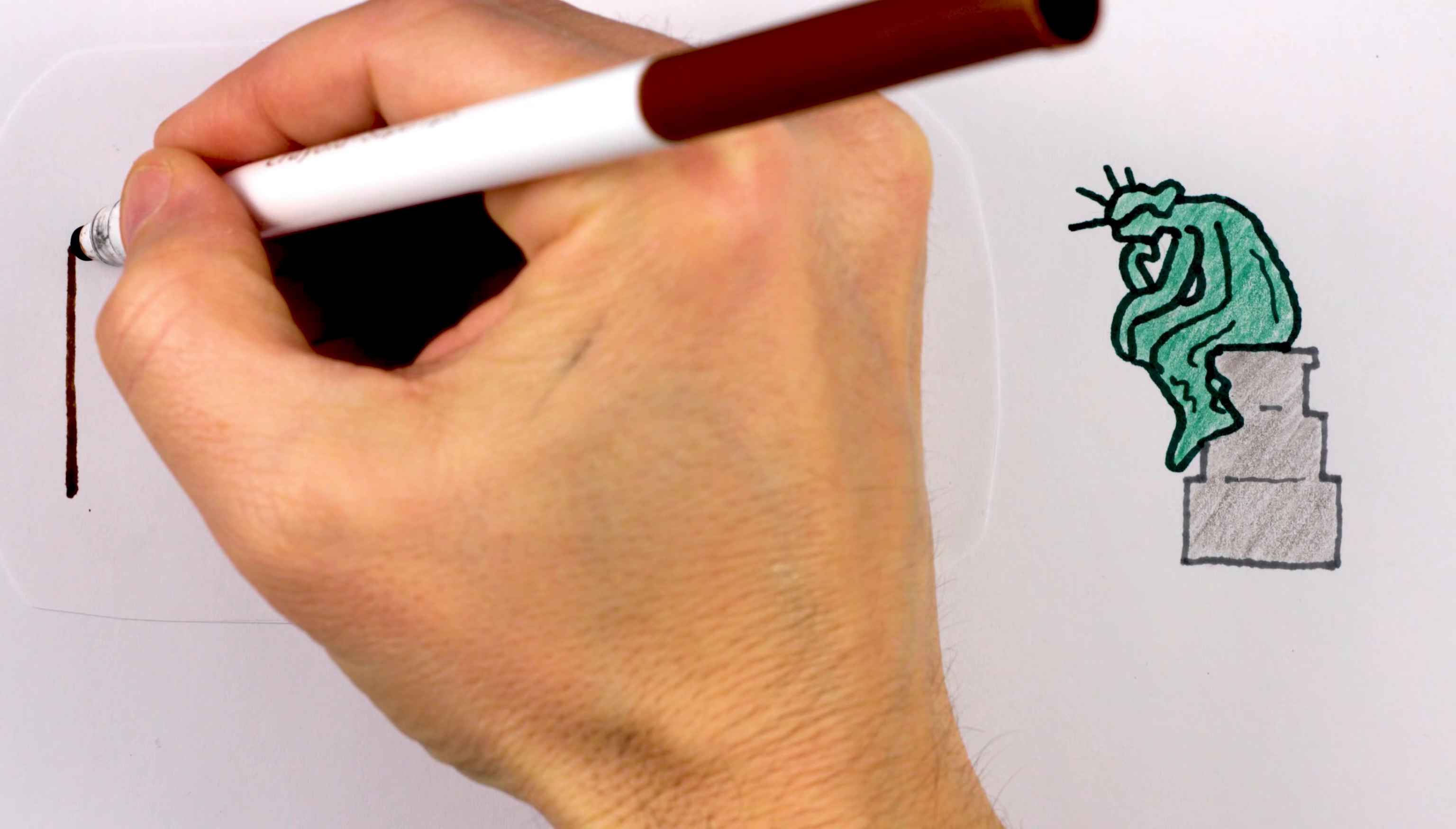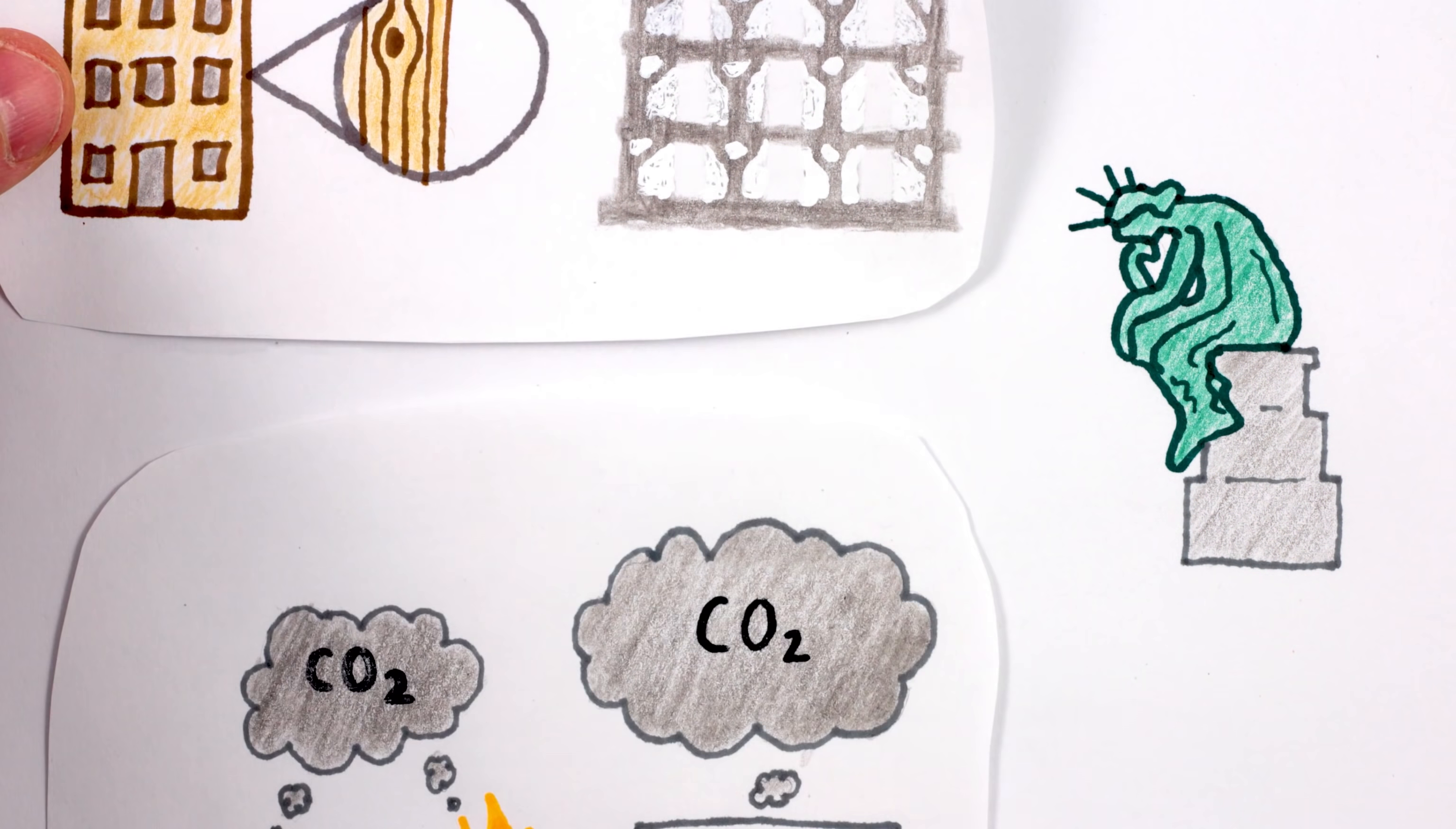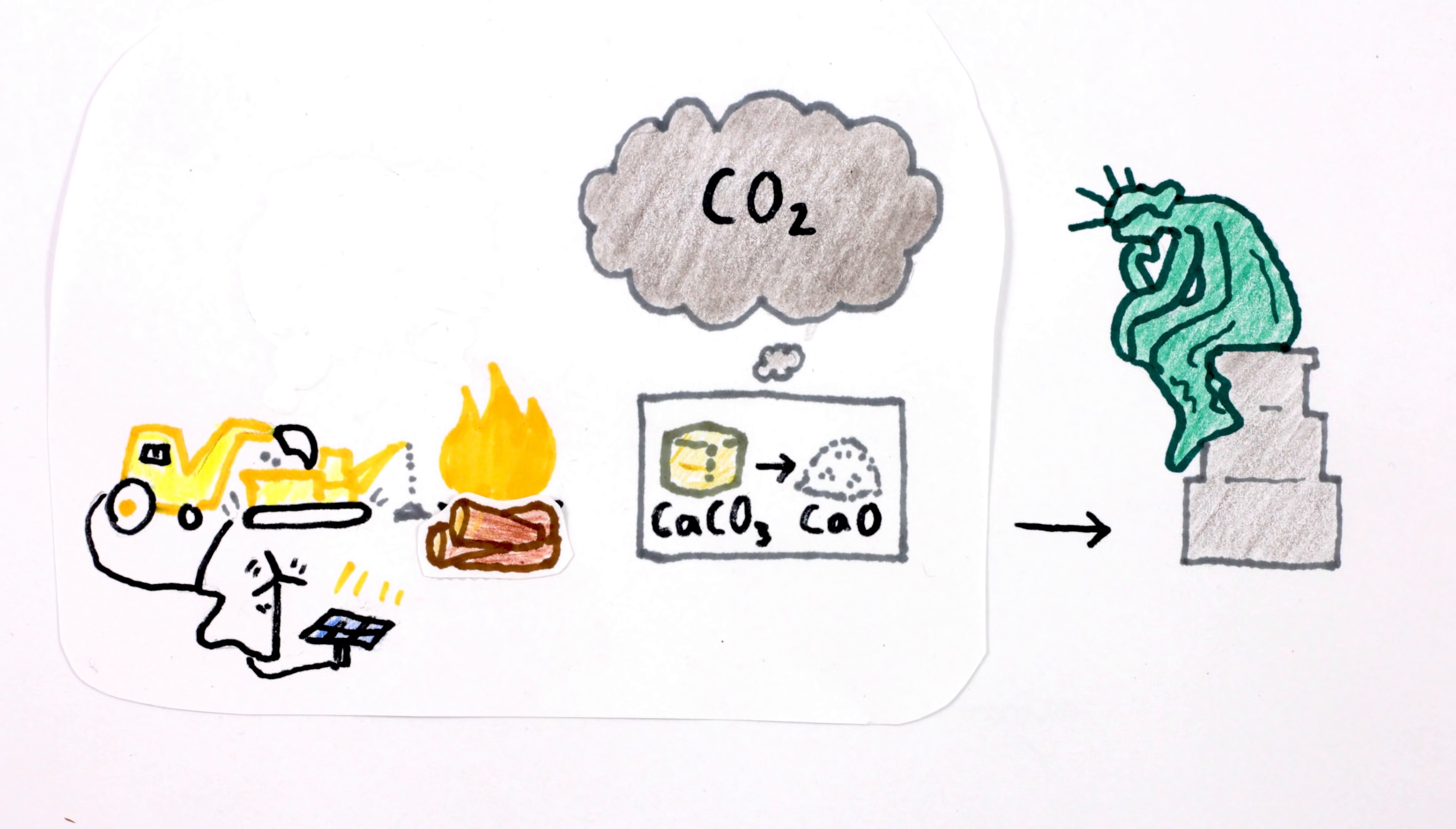So, what to do about cement? We could build some of these new buildings out of other materials, and we also could use less cement per building. For the cement we do use, we could try to manufacture and heat it using renewable sources. And these things would certainly help.